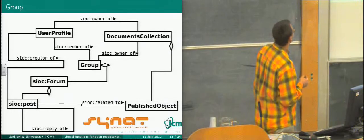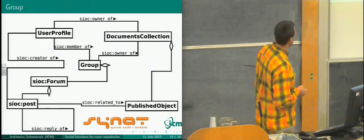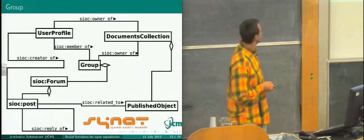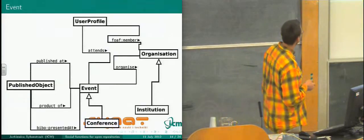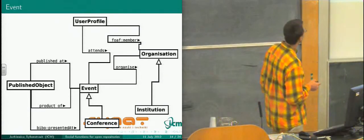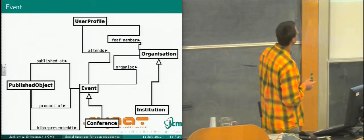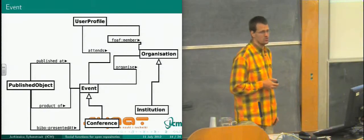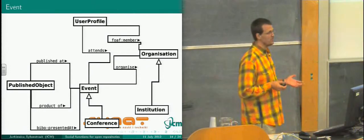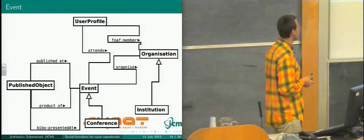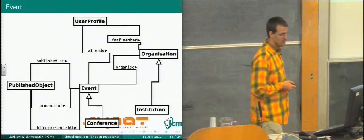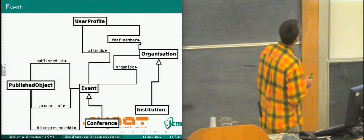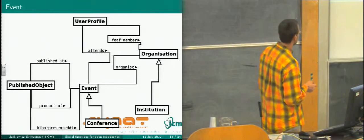A user is the creator of a post. When posts are replies to each other, we get a tree structure and threads. A post belongs to the forum. Now, about events: we can say that an event is organized by some organization — especially an institution, but it could also be a consortium, an association, or a group of individuals not connected in a formal way. A kind of event is a conference. And a published object could be published at an event, could be a product of an event, or could be presented at an event.